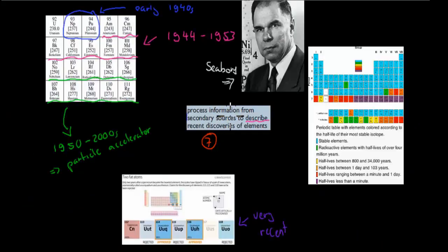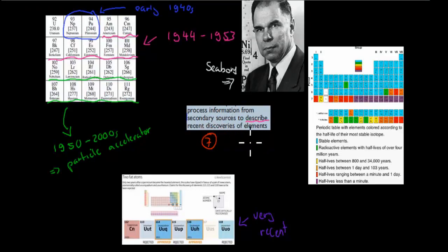Next was process information from secondary sources to describe recent discoveries of elements. So these were all the transuranic elements that were discovered. So first of all, we start with the early 1940s through a nuclear reactor. We found neptunium and plutonium, so atomic number 93 and 94. And that was done in the early 1940s by Seaborg and his team.